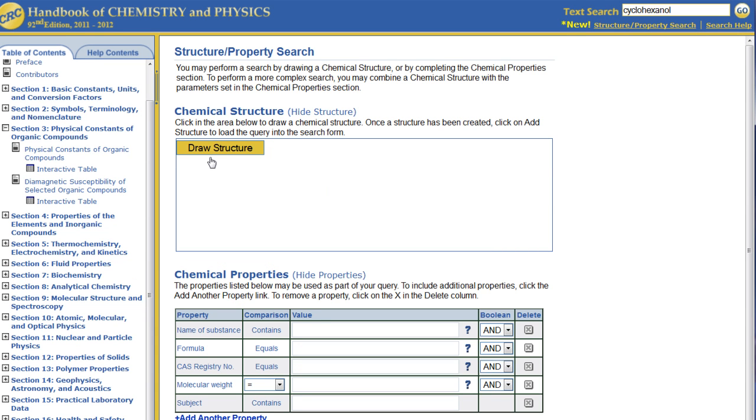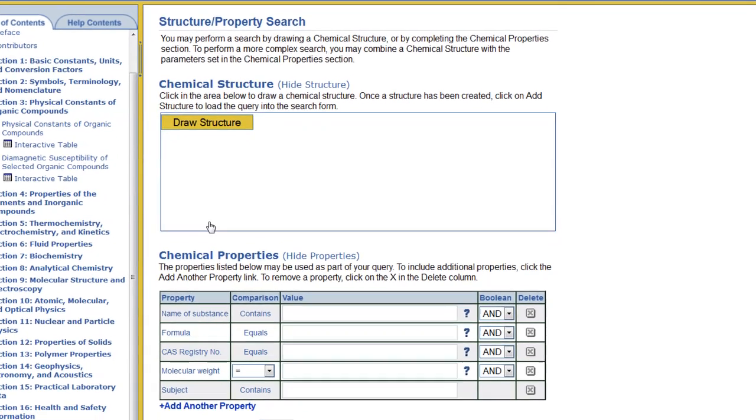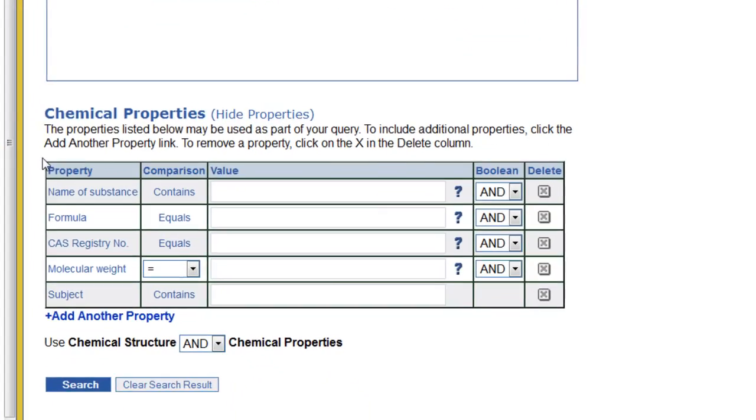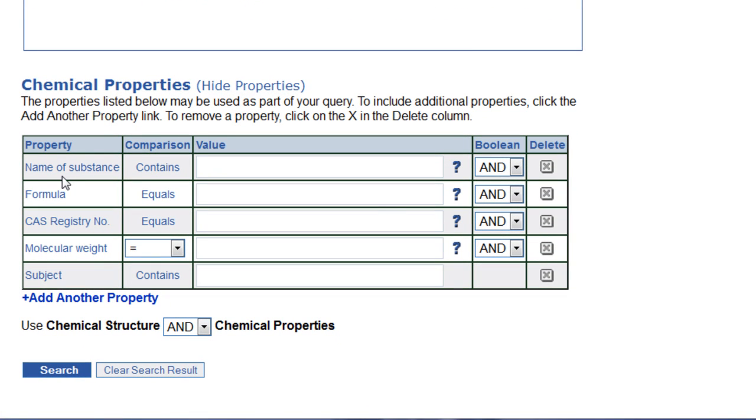You will see that you can search either by drawing a chemical structure or by entering information in the chemical properties section below. This tutorial will explain how to use the chemical properties option to conduct your search.